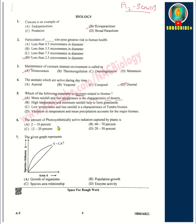Sixth question: The amount of photosynthetically active radiation captured by plants is option A — 2 to 10%. Seventh question: The given graph represents species-area relationship.